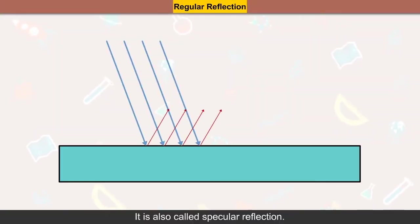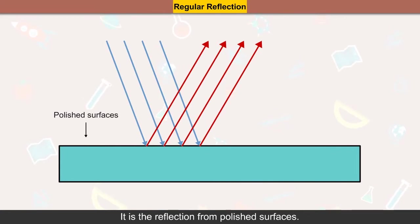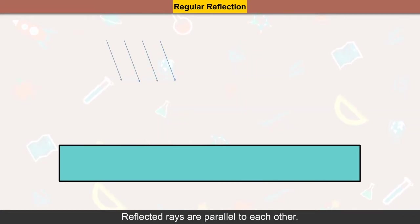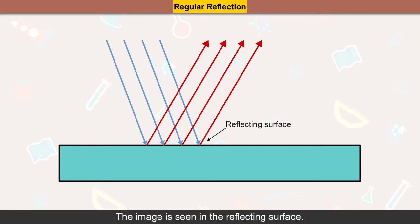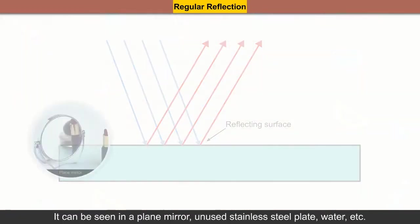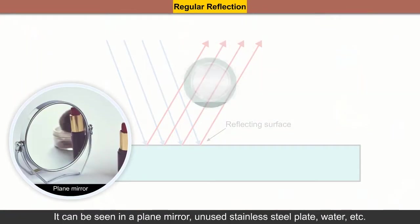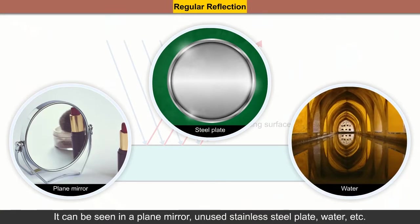Regular reflection, also called specular reflection, is the reflection from polished surfaces. Reflected rays are parallel to each other, and the image is seen in the reflecting surface. It can be seen in a plain mirror, an unused stainless steel plate, water, etc.